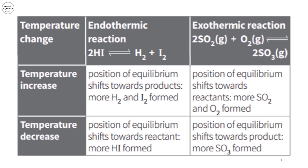For example, for the endothermic reaction of hydrogen iodide forming hydrogen and iodine: increasing temperature provides more energy, so the forward reaction is favored and more product forms. Decreasing temperature removes energy, so the reverse reaction predominates according to Le Chatelier's principle. For the exothermic reaction of SO₂ with O₂ giving SO₃: increasing temperature shifts the equilibrium in reverse. Decreasing temperature, such as using ice baths, pushes the reaction in the forward direction.